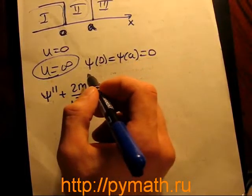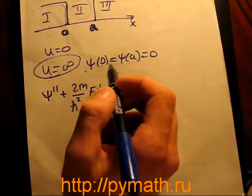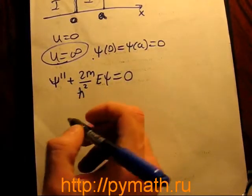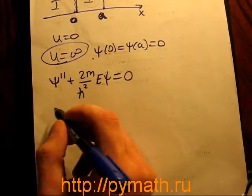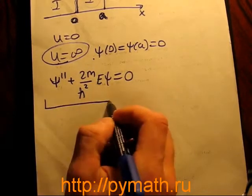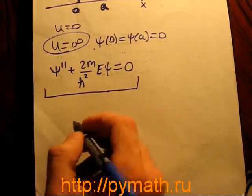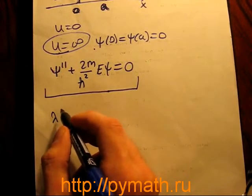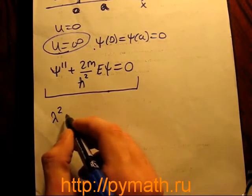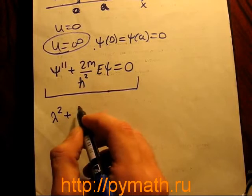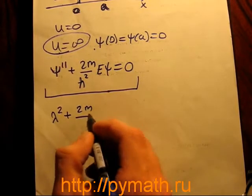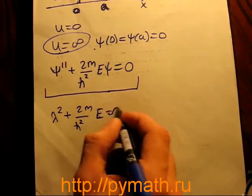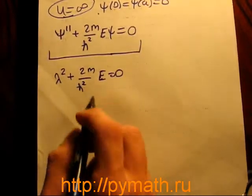Let's continue our solution. From this equation we can build a characteristic equation that can be represented in the following form: α² + (2mE/ℏ²) = 0.